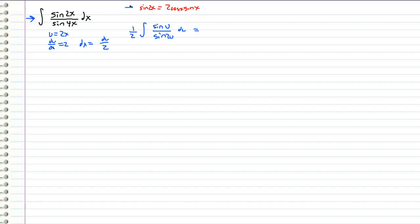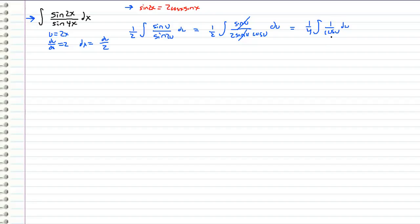Now I'm going to apply the trig identity. I can rewrite this as 1/2 times the integral of sine u over 2 sine u times cosine u du. We see that the sine u in the numerator cancels with the sine u in the denominator, and moving the 1/2 factor out, we get 1/4 times the integral of 1 over cosine u du. Things look a lot simpler now, and in fact I can rewrite this as 1/4 the integral of secant u du.